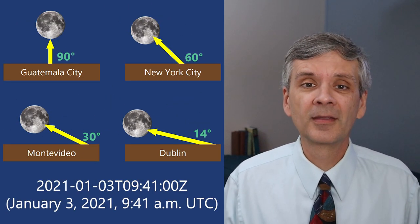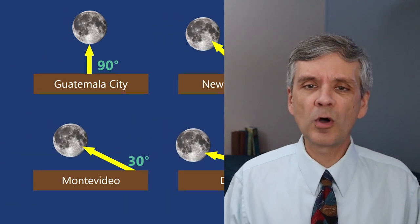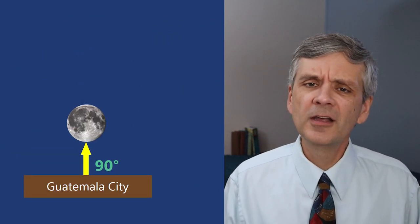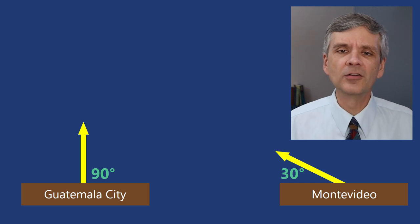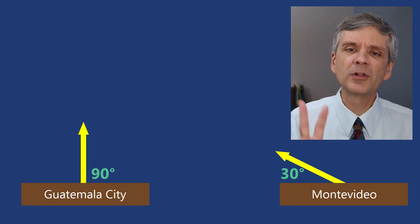Let's simplify by looking at just Guatemala City and Montevideo. How is it that the moon appears at these two different angles? Here are two possible explanations.